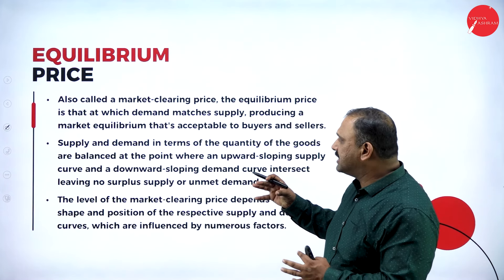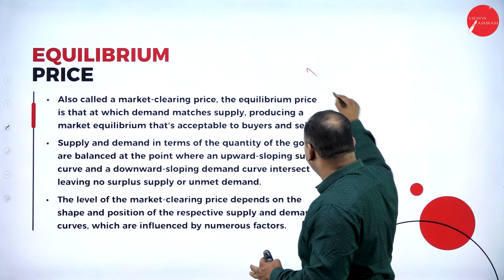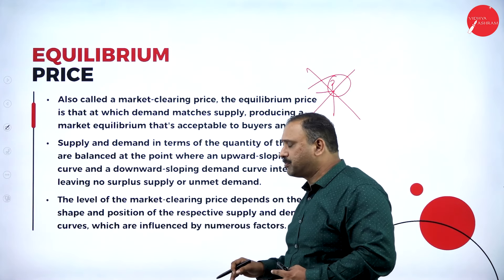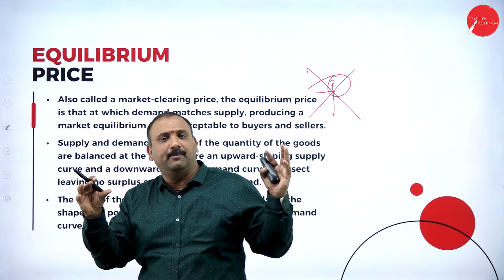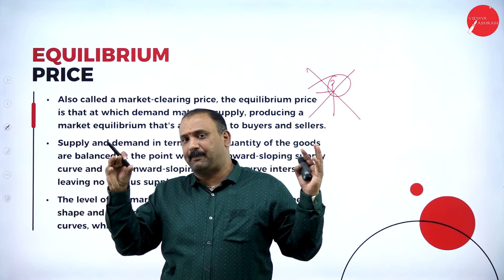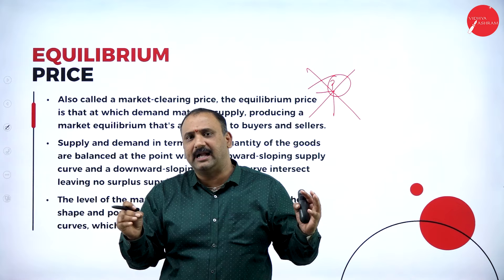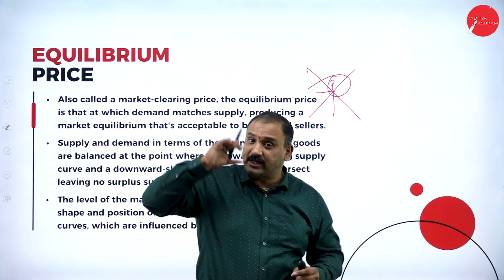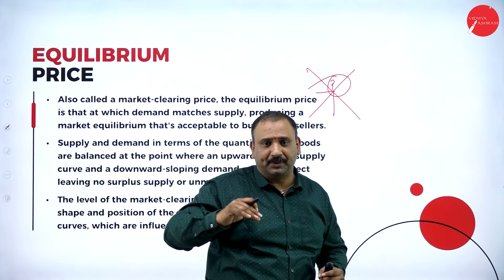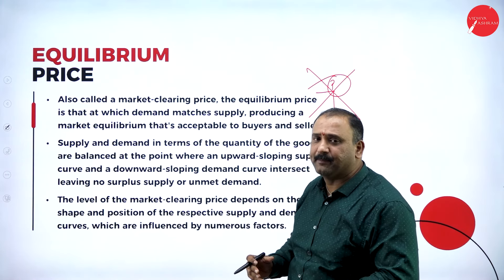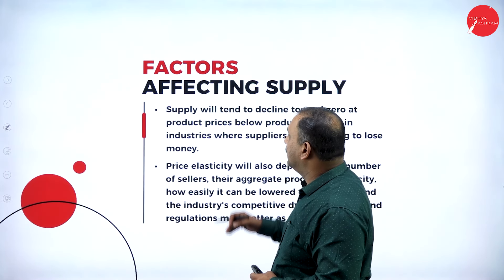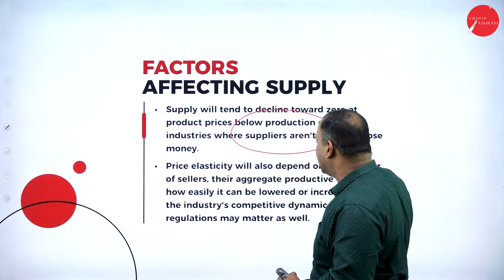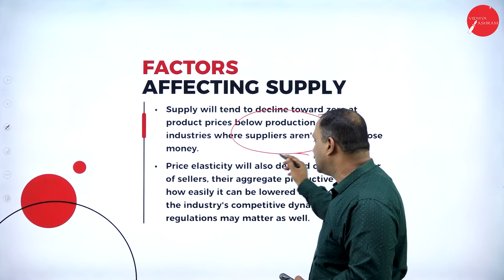The equilibrium price is very essential — it is the point at which the price matches, making it the market clearing price. At this point, the market tells the consumer clearly what the right, available price is so they can make the purchase. Once the consumer decides to accept this price, they set it as the equilibrium price in their mind and proceed to shop. Factors affecting supply include inventory costs, supply cost, price elasticity, number of sellers, aggregate productive capacity, competitive dynamics, tax regulations, and government policies.